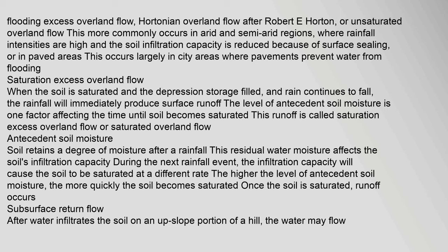Saturation Excess Overland Flow occurs when the soil is saturated and the depression storage is filled, and rain continues to fall — the rainfall will immediately produce surface runoff. The level of antecedent soil moisture is one factor affecting the time until soil becomes saturated. Soil retains a degree of moisture after a rainfall; this residual moisture affects the soil's infiltration capacity. The higher the level of antecedent soil moisture, the more quickly the soil becomes saturated, at which point runoff occurs.